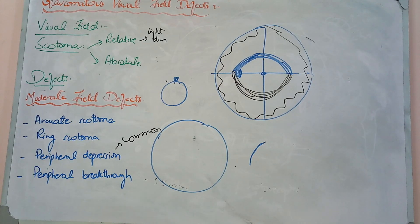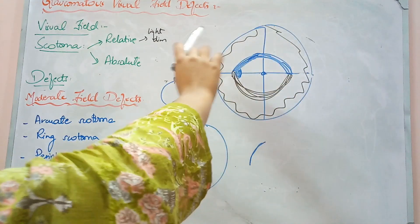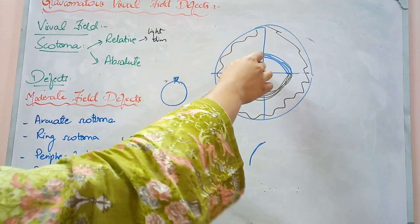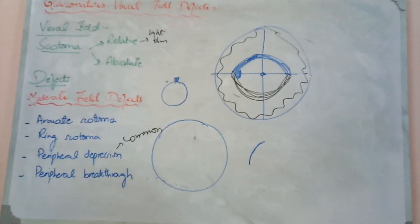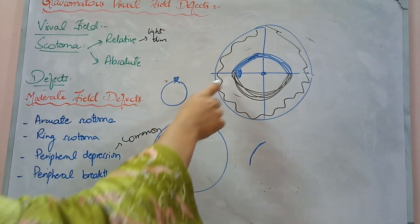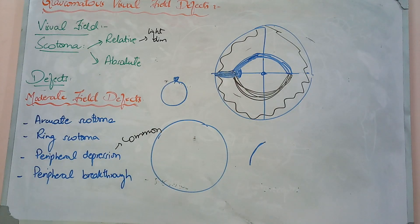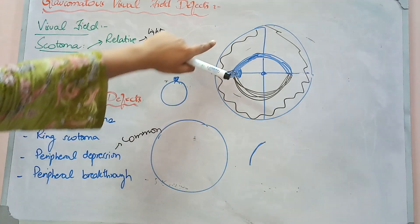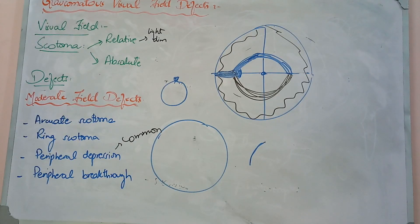Peripheral depression: if you have a ring scotoma in the center and the periphery is also bad, what happens is that the arcuate scotoma will extend and go to meet the peripheral scotoma. This is called peripheral breakthrough — the peripheral defect is completely broken through. These are the four moderate visual field effects.